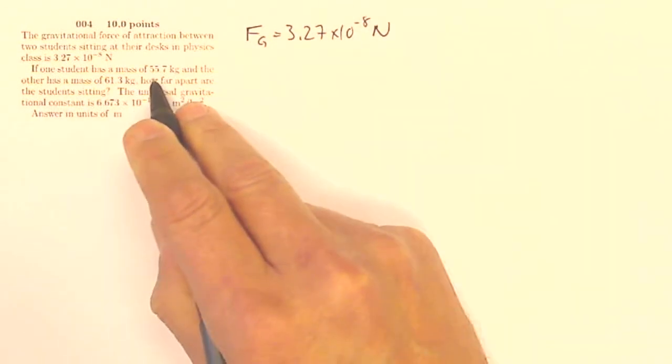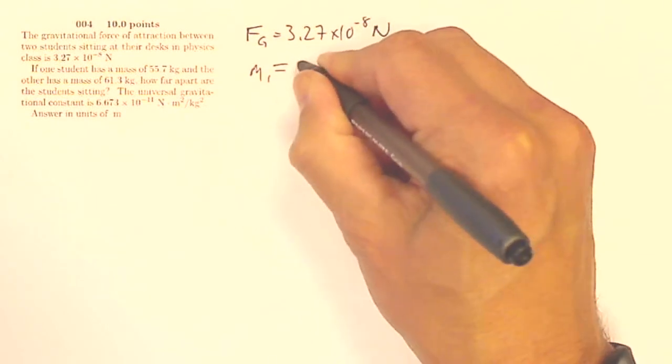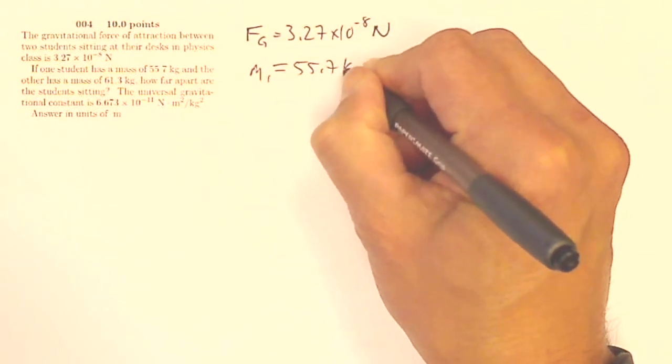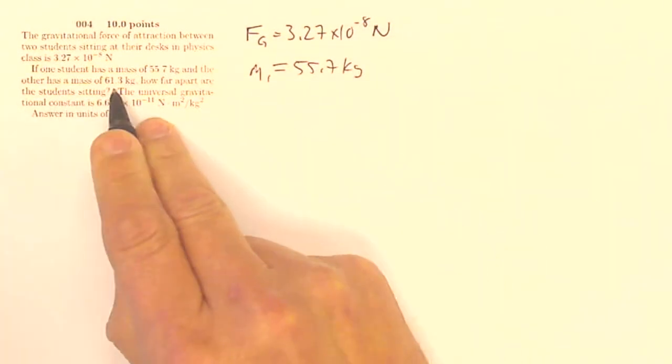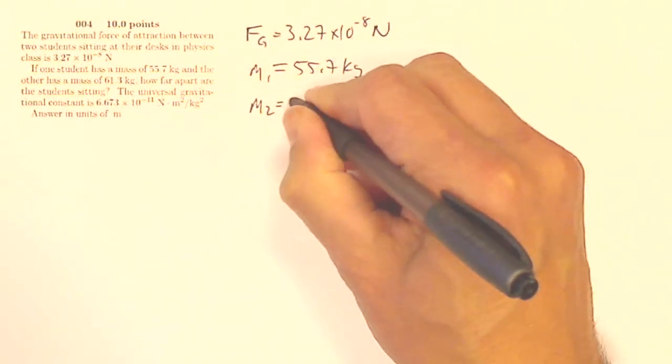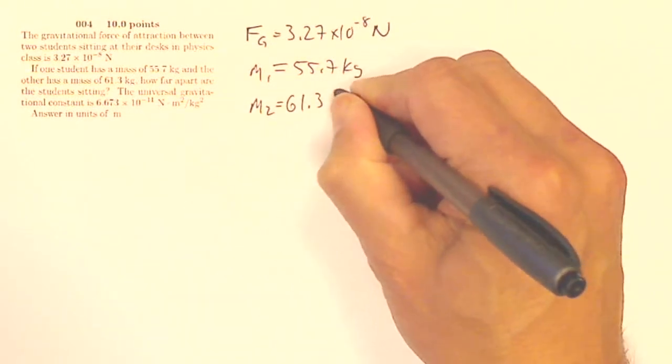If one student has a mass of 55.7, so I'll call that M1 equals 55.7 kilograms, and the other has a mass of 61.3 kilograms, so M2 is 61.3 kilograms.